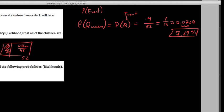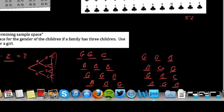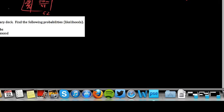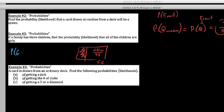A few notes: if it's a fraction, we should always reduce. We can also express probabilities as percentages or decimals. For the next example: if a family has three children, find the likelihood that all three children are girls. Going back to our sample space of 8 outcomes, only one of them is girl-girl-girl. So the probability of girl-girl-girl is 1 out of 8, which is 0.125, or a 12.5% chance.